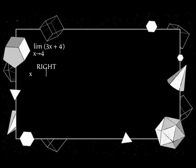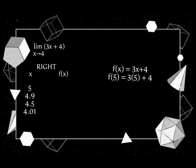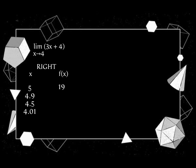Now, the table of values of x from the right: we have 5, 4.9, 4.5, and 4.01. We will substitute the values of x again. f of 5 is equal to 3 times 5 plus 4. 3 times 5 is equal to 15, plus 4 equals 19. When we substitute all the values of x, we will get 18.7, 17.5, and 16.03.